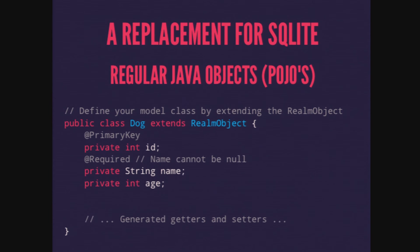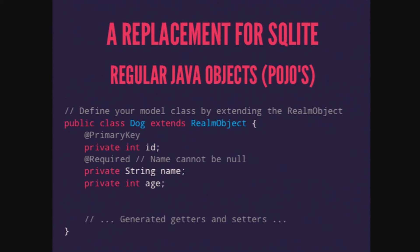The best way to understand Realm is to look at a simple object. This is Java — a plain old Java object, a POJO. Let's say we want to save a bunch of dogs because we're creating a dog tracking application. The only thing we have to do is extend RealmObject. We use a @PrimaryKey annotation — primary keys don't have to be integers, they can be strings or longs. We also have @Required so the name can't be null, and age will default to zero. I've left out the getters and setters just to save space.